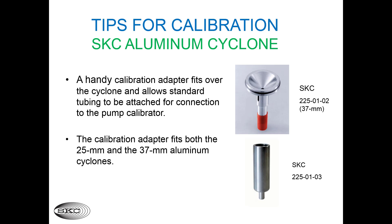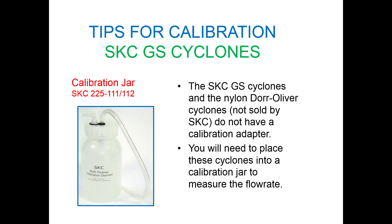Here are some tips for calibration. If you are using the SKC aluminum cyclone, you can use a handy calibration adapter to attach the cyclone to the pump calibrator. The adapter will fit both the 25 millimeter and the 37 millimeter cyclones. Neither the SKC GS cyclones nor the nylon Dor Oliver cyclone have a calibration adapter — you will need to place these cyclones into a calibration jar to measure the flow rate.